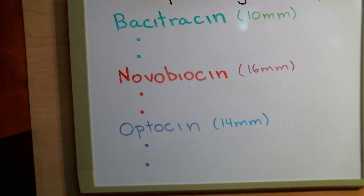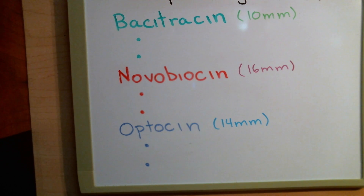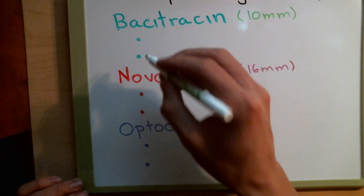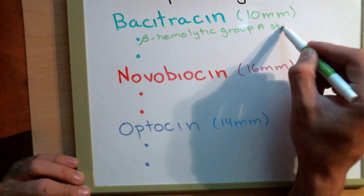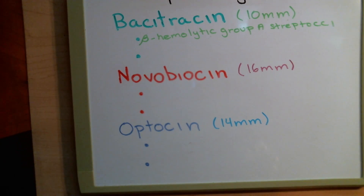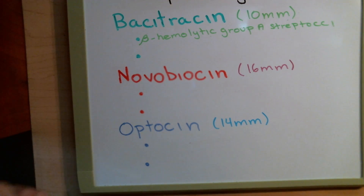With Bacitracin, we're looking to inhibit the growth of our bacteria. The bacteria that we'll be inhibiting will be beta-hemolytic group A streptococci. It inhibits bacterial cell wall synthesis, so the bacteria is no longer able to put up that protective layer and therefore dies off.